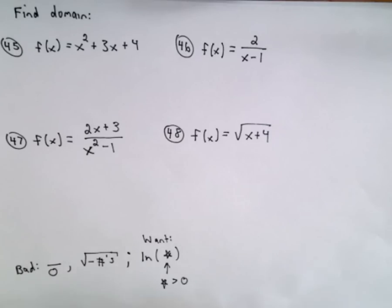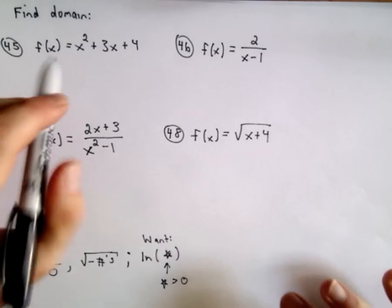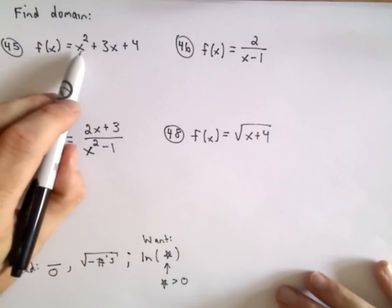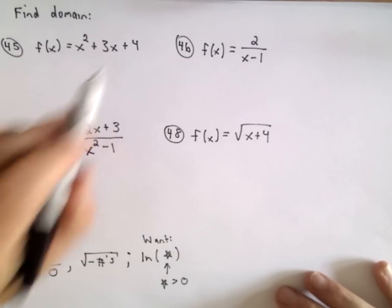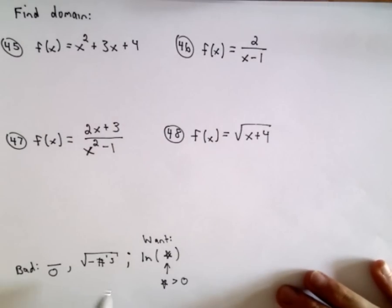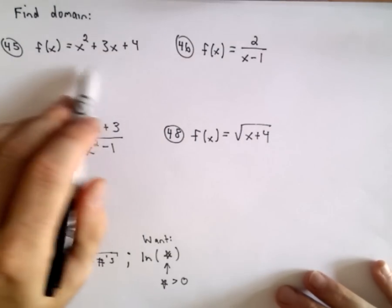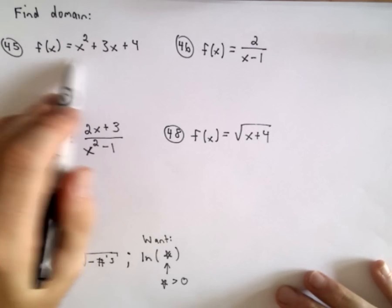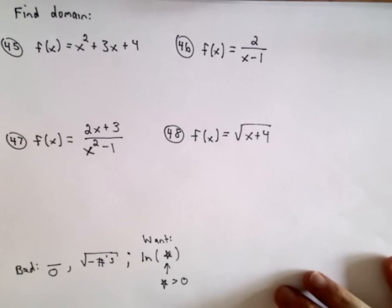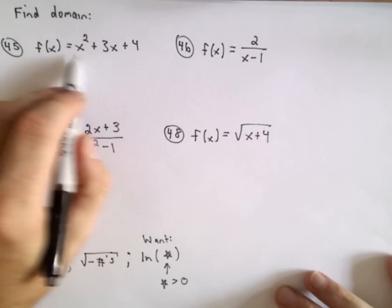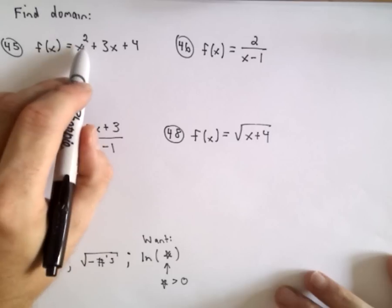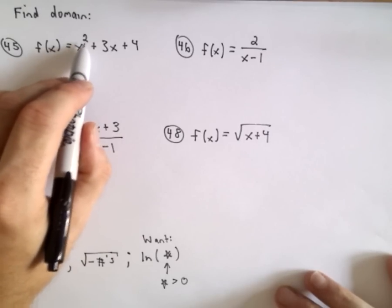So we don't have any logarithms in these problems, but we will in the next video. So to start off with, f of x equals x squared plus 3x plus 4. Well, there's really none of these restrictions going on. I don't have any fractions, I don't see any radicals, I don't see any logarithms. So this is what's known as just a polynomial when you have variables to positive whole number powers.